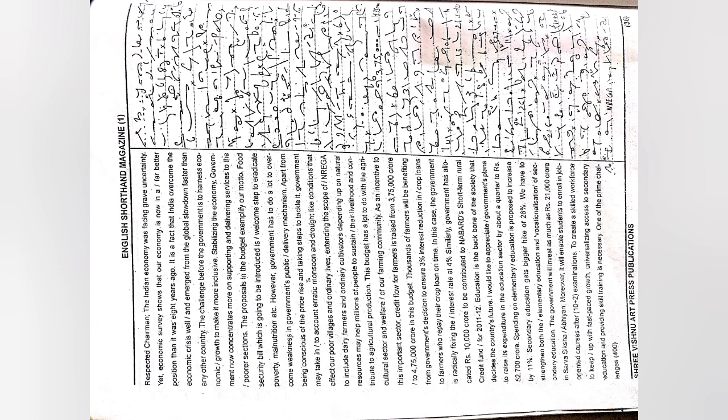Food Security Bill, which is going to be introduced, is a welcome step to eradicate poverty, malnutrition, etc. However, government has to do a lot to overcome weaknesses in government's public delivery mechanism. Apart from being conscious of the price rise and taking steps to tackle it, government may take into account erratic monsoon and drought-like conditions that affect our poor villages and ordinary lives.